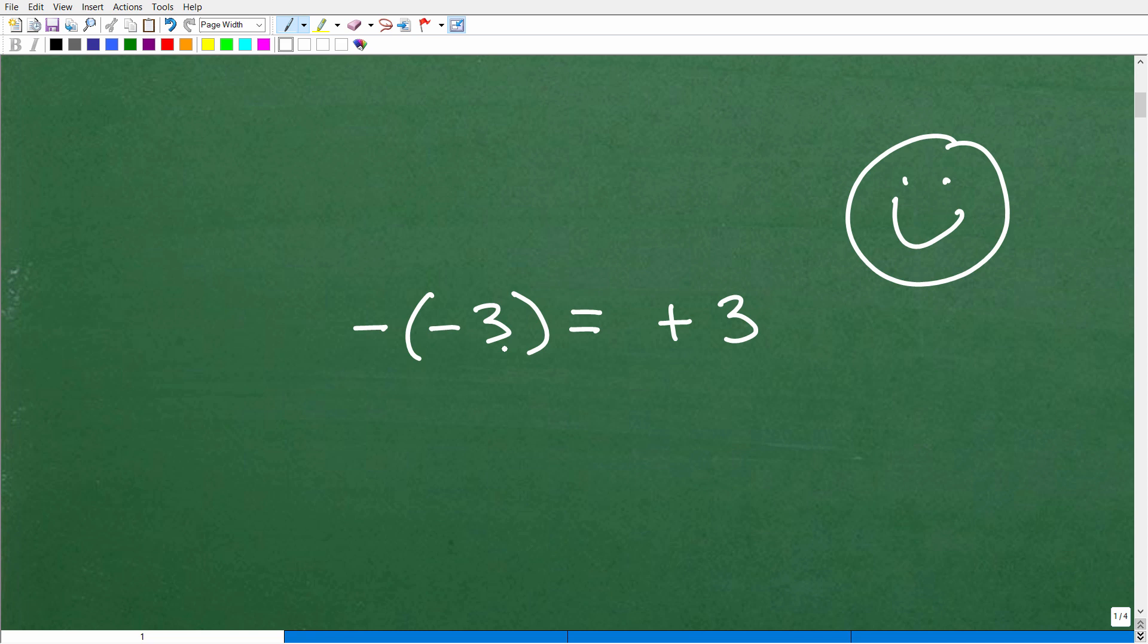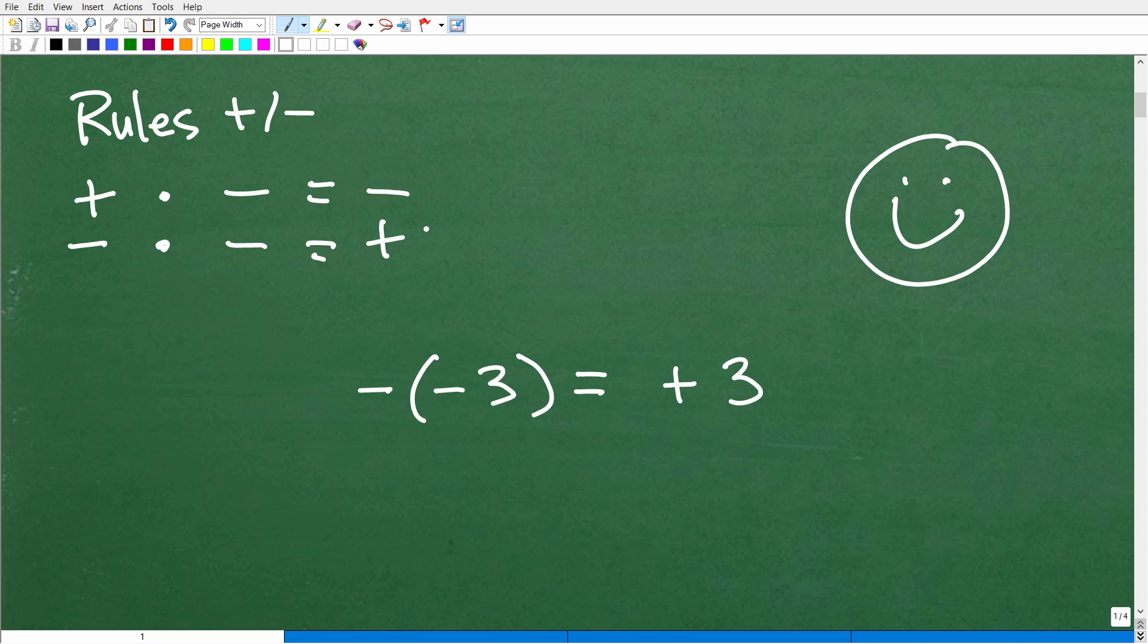If you got this wrong, again, a lot of people do get this wrong. The first thing you need to know is you need to know the rules for positive and negative numbers. What is a positive times a negative? If I have a positive number times a negative number, what is the answer? Hopefully, you know it's negative. If you didn't know that, then you're going to have some trouble with this. What is a negative times a negative? If you said positive, very good.